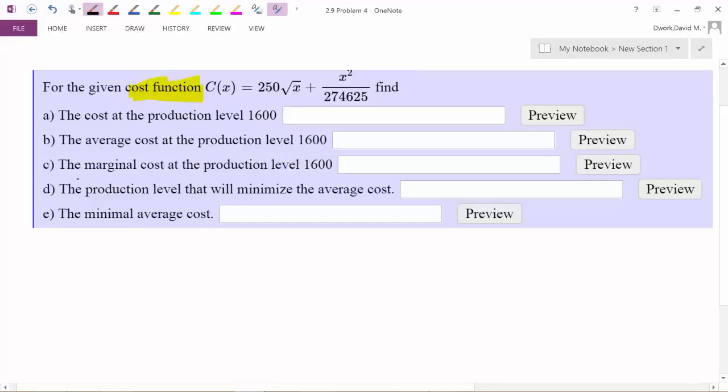Marginal cost. Now this is a calculus word, right? When we learned about marginals earlier in the notes, we said marginal is just hidden word for derivative. So how do I find the marginal cost? Well, I take the derivative of the regular cost.